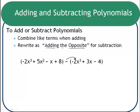I like to draw some arrows here and think about using the distributive property. So subtracting negative 2x cubed is the same thing as adding 2x cubed. And subtracting 3x is the same thing as adding a negative 3x. And subtracting negative 4 is the same thing as adding a positive 4.